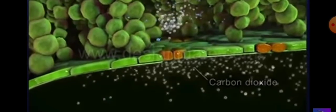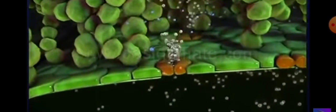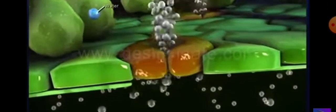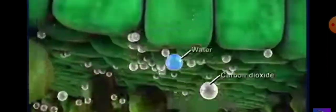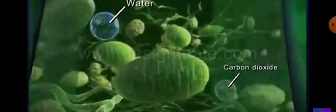A leaf absorbs carbon dioxide from the environment through the stomata, which after passing through air spaces enter into the chlorophyll containing cells.